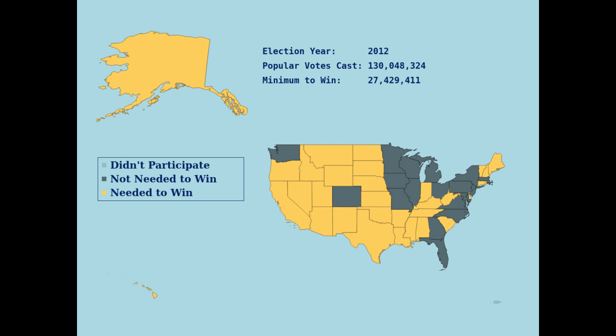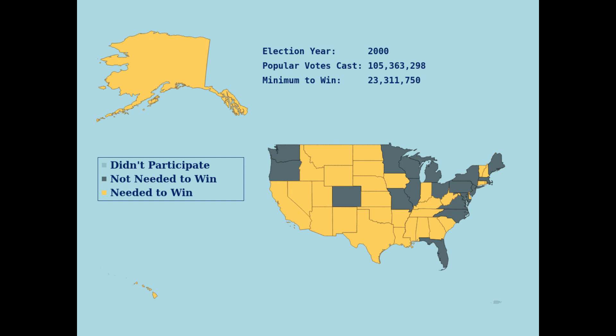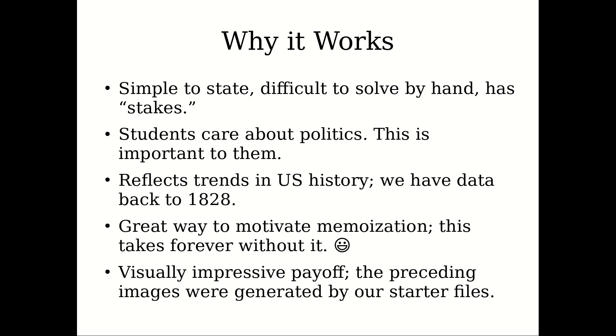We have election data going back to 1828 and can look at other elections — for example 1984, where you're no longer winning California but winning most central states, or the year 2000. All of these plots are generated by the assignment starter files. What's interesting is that this is a classic problem: the knapsack problem, where every state has a weight (votes needed to carry it) and a value (number of electors).